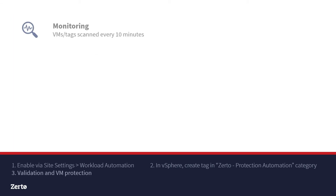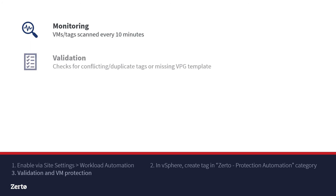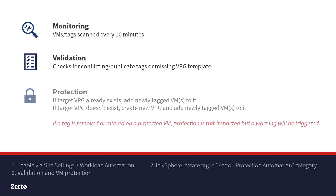Zerto monitors those tags every 10 minutes and creates or updates VPGs if any new tags were applied since the last check. If more than one tag is applied to the same VM and both tags map to valid VPG templates, the VM will not be automatically protected until the duplication is fixed. For this and other AutoProtect issues, Zerto will attempt VPG creation three times before stopping and triggering an alert so that the issue can be investigated.